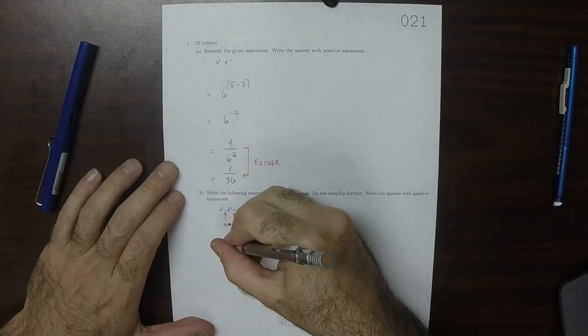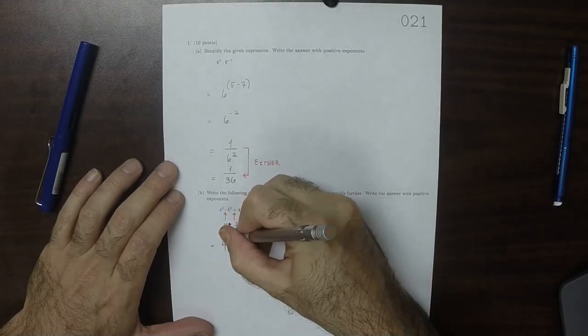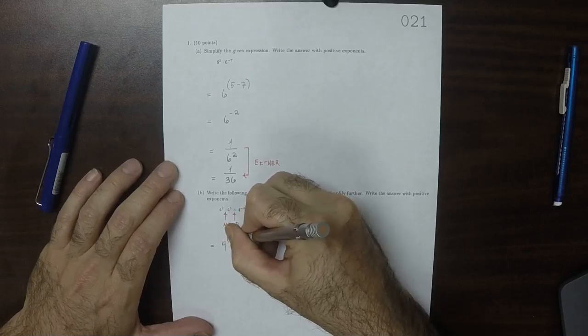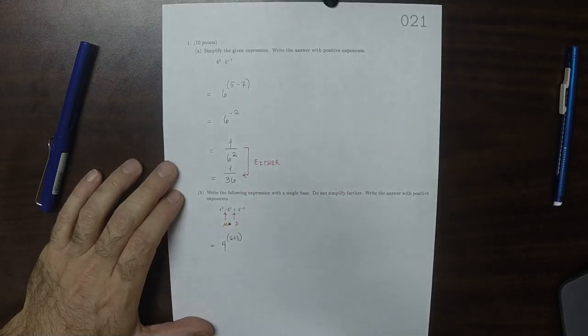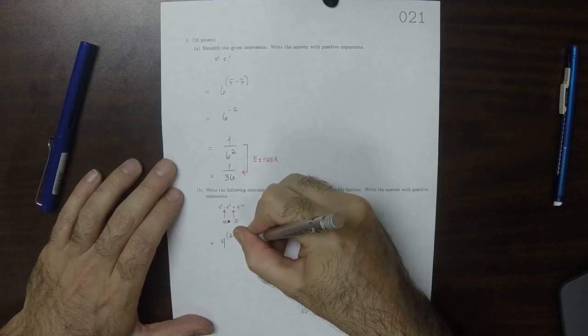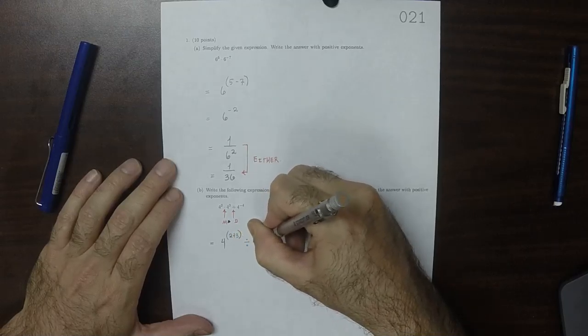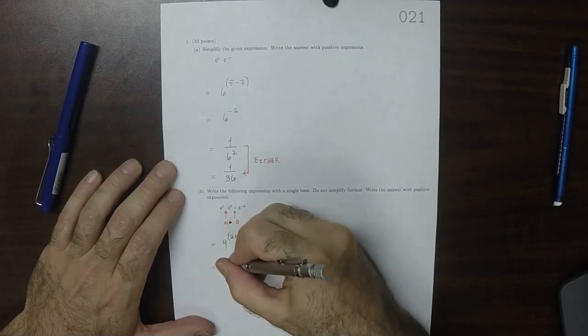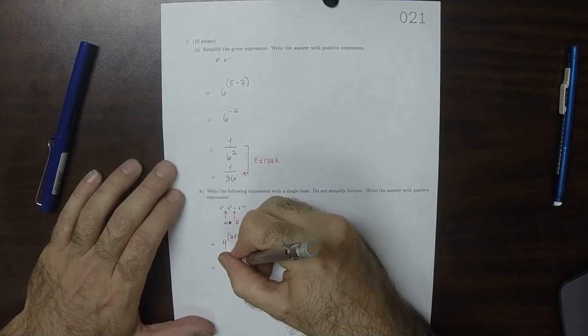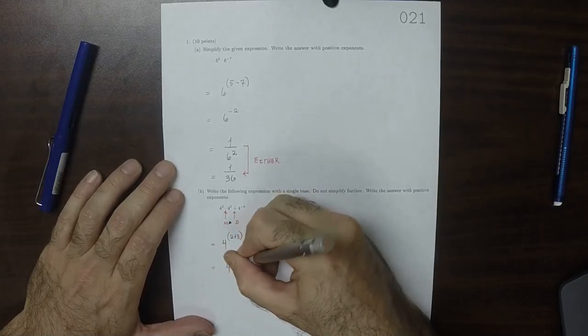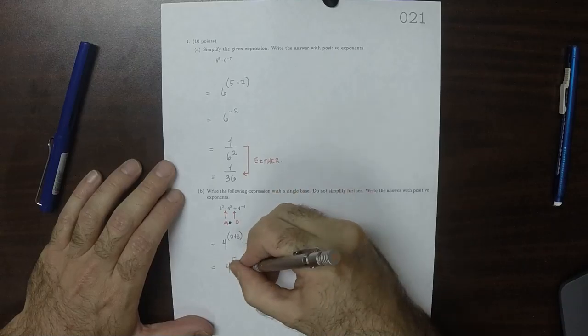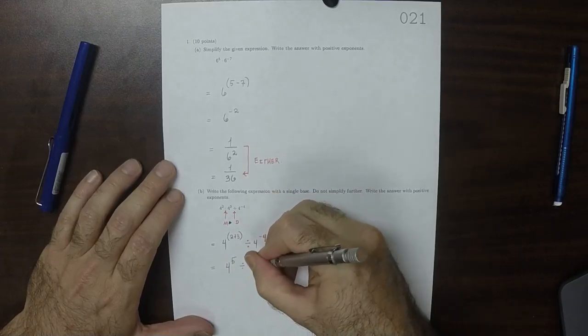So that would be 4 to the new exponent, 2 plus 3, and then divide by 4 to negative 4. So that would be 4 to exponent 5, divide by 4 to negative 4.